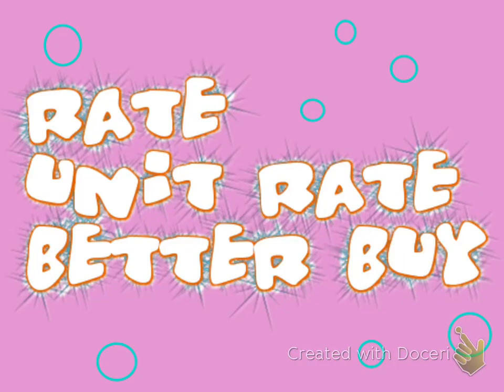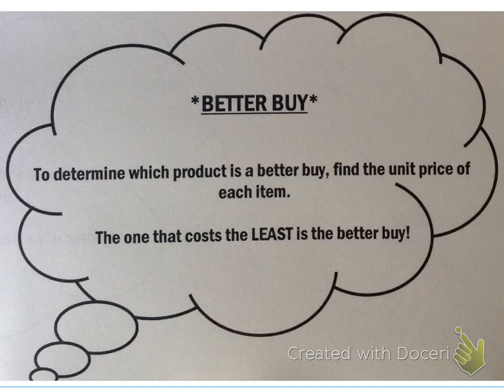Rate, unit rate, and better buy — and in this video we're focusing on better buy. So if you're watching this video, you should have already watched the rate and unit rate video before this. To determine which product is a better buy, find the unit price of each item. The one that costs the least is the better buy. You're going to use this all the time in real life — I sit there in the grocery store and figure this out every single week. It's fantastic.